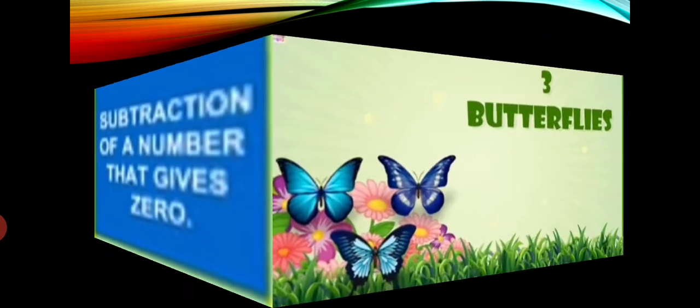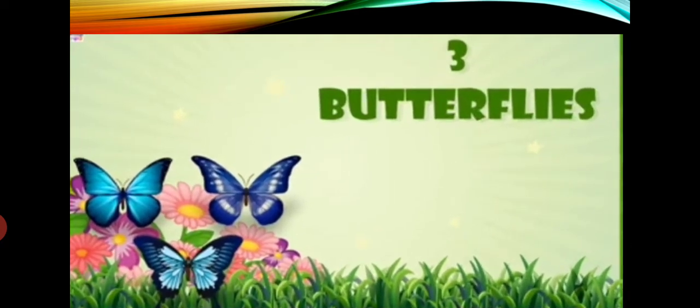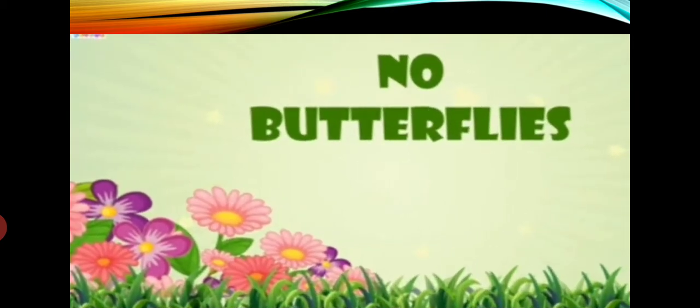Next, subtraction of a number that gives 0. When do we get 0? Suppose there are 3 butterflies sitting on the flower. After some time, all the 3 butterflies flew away. 3 minus 3 that is equal to 0. If we subtract any number from the same number, we will get answer 0.